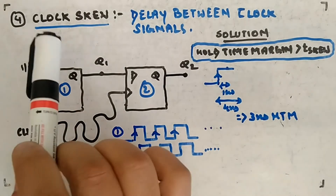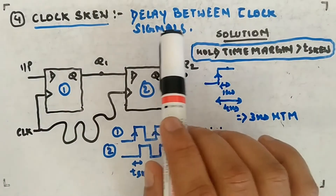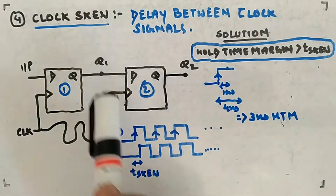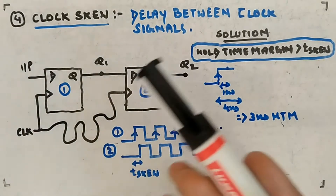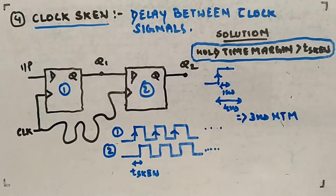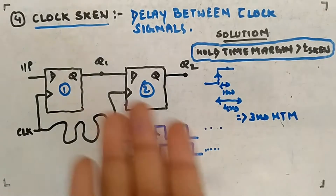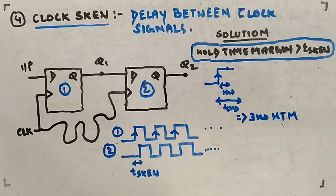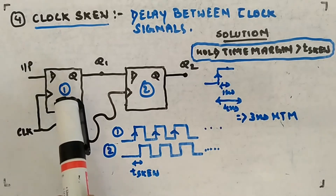Let's look at another characteristic of flip-flops called clock skew. This is the delay between clock signals. Imagine you have a circuit with two D flip-flops with some input and output. Ideally, the clock signals should go at the same time to all the flip-flops simultaneously, but practically, one flip-flop will get the clock signal at one time and another flip-flop will get it at a different time.